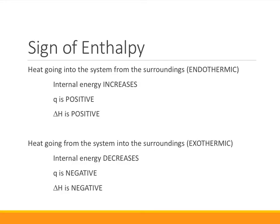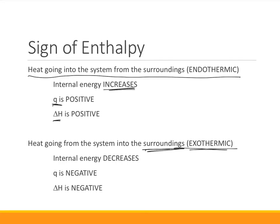The sign of enthalpy is going to be the same as we had for heat. If heat is going into the system from the surroundings, that is an endothermic process — the internal energy increases, the heat is positive, therefore ΔH is positive. If heat is leaving the system to the surroundings, then we have an exothermic process — the internal energy decreases, the sign of Q is negative, as is the sign of ΔH. So for endothermic processes ΔH will be positive, and for exothermic processes ΔH will be negative.